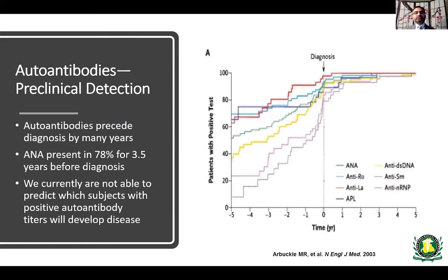If somebody presents with a high-titer positive ANA and they don't fulfill all the criteria for lupus, our job as clinicians is to monitor them closely to see if they develop full-blown lupus in the next few years. A study done in military recruits — where blood had been stored for a number of years — shows that autoantibodies are present several years before the patients were diagnosed with lupus, and that pretty much all patients had autoantibodies once diagnosed.